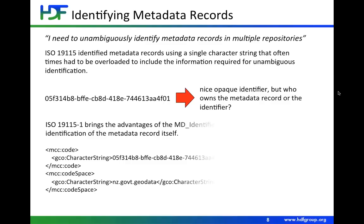In 19115-1, we replaced this character string with an MD identifier. That identifier has been improved with the addition of a code space. This little snippet of XML shows the identifier we saw previously, along with the code space of the organization that's responsible for that identifier. I think this will help a lot, particularly as metadata records are shared across a variety of repositories.